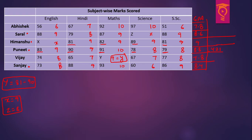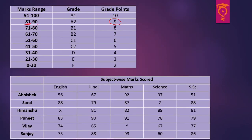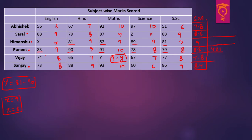Since small x is 9 and you get a grade point of 9 when you have a minimum score of 81, capital X is supposed to be at least 81. So the minimum total score for Himanshu is 313 plus 81 equals 414, and the maximum is 420, since 421 is Puneet's highest score and Himanshu cannot match or exceed it. That gives seven possibilities for capital X: 81 to 87.